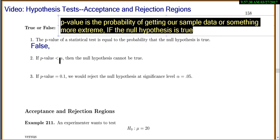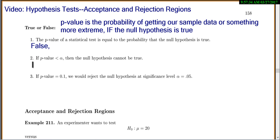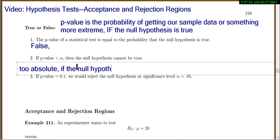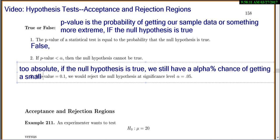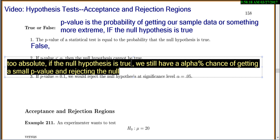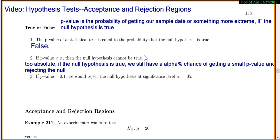Let's see number two. If the p-value is less than alpha, so that means if you get a small p-value, then the null hypothesis cannot be true. Now, that cannot be true is just too extreme. That's too absolute, because if the null hypothesis is true, we still have an alpha percent chance